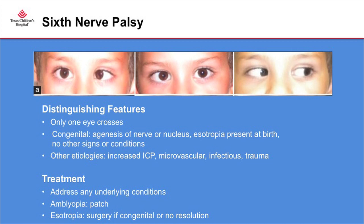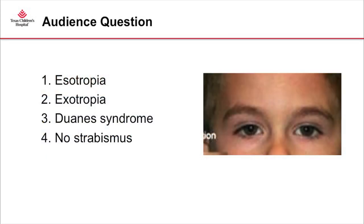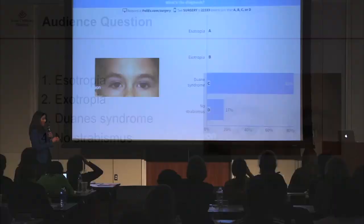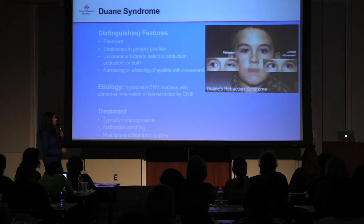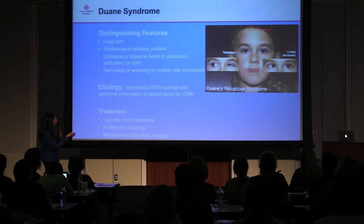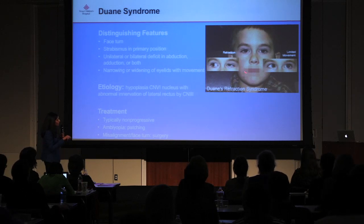Treatment for sixth nerve palsy, like third nerve palsy, is to address any underlying conditions. If amblyopia is present, patching is indicated. Surgery is recommended for the esotropia if it's congenital or if there's no resolution as underlying conditions improve. The next case is Duane syndrome — when you first look at the child the eyes are aligned, but when the child looks to the left there is an abduction deficit.